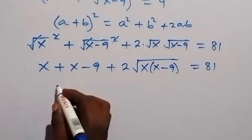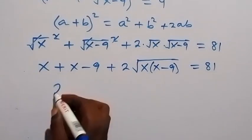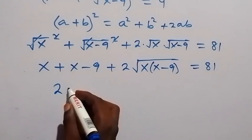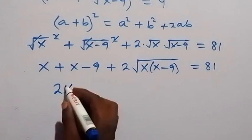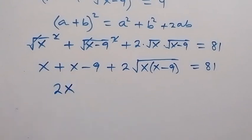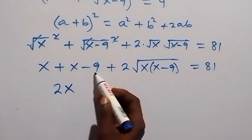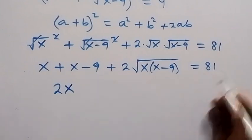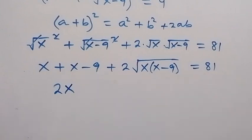x plus x gives 2x, so we can write 2x. We take minus 9 to the other side, so it becomes plus 9. Therefore 81 plus 9 gives us 90.